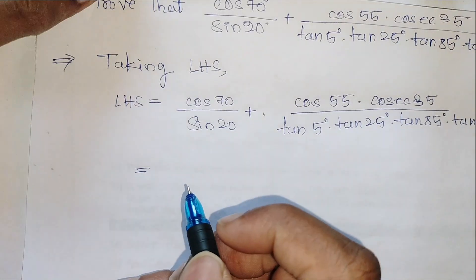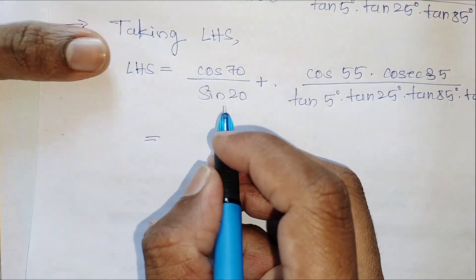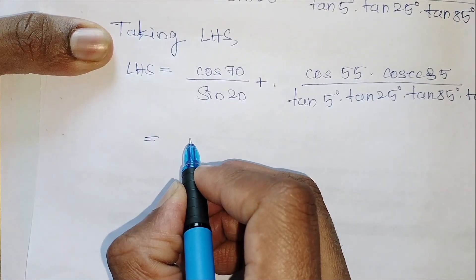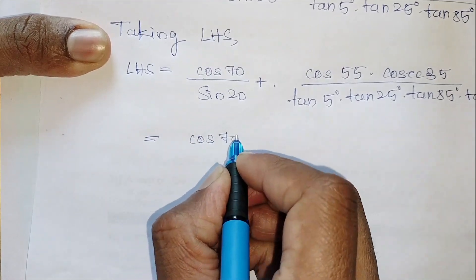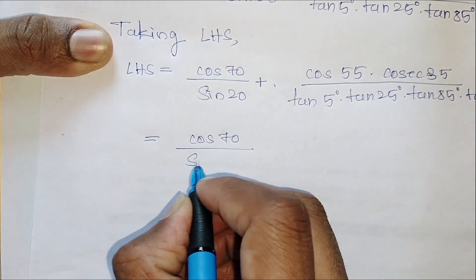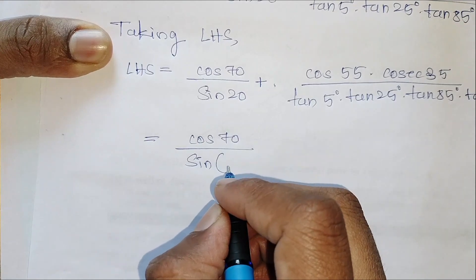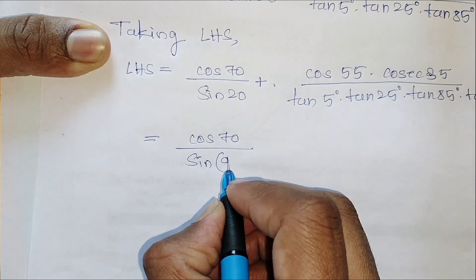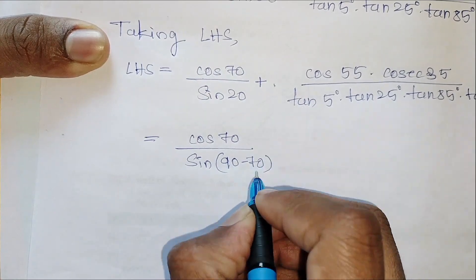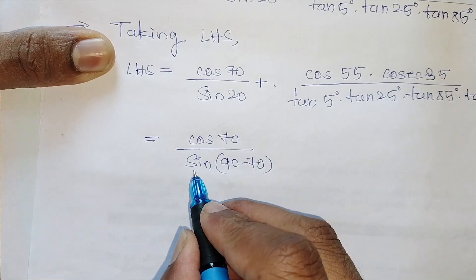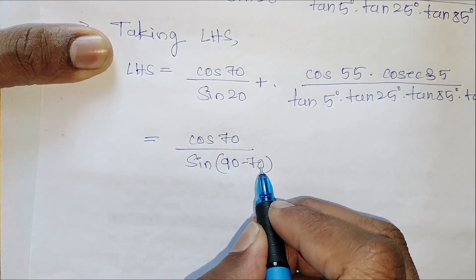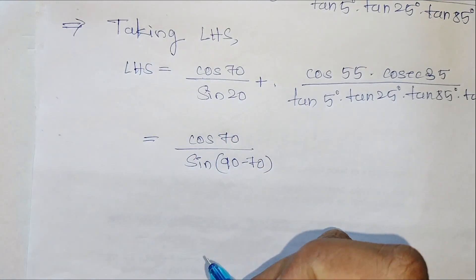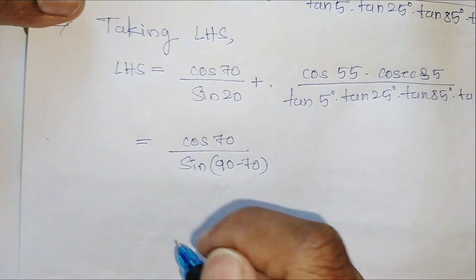Here you can see that cos 70 is there. We don't know the value for 70 degrees — the cos value for 70 degree, and even 20 degree also. So what we can do is convert: 90 minus 70 is 20, so sin of 90 minus 70 is cos 70, and hence both the numerator and denominator get cancelled.